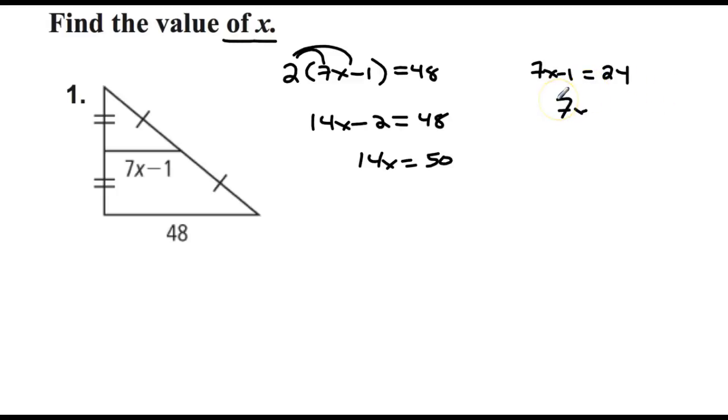You add one to each side, you get 7x equals 25. And in both cases, you get the same thing, which is good. That's what we want. x should be equal to 3.57.